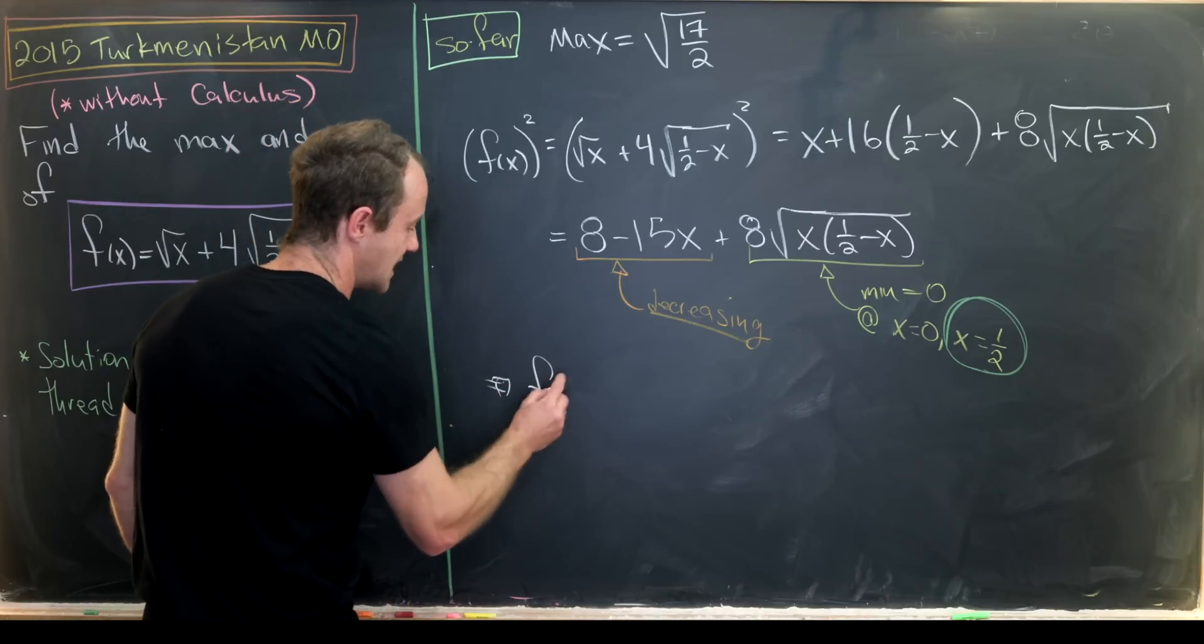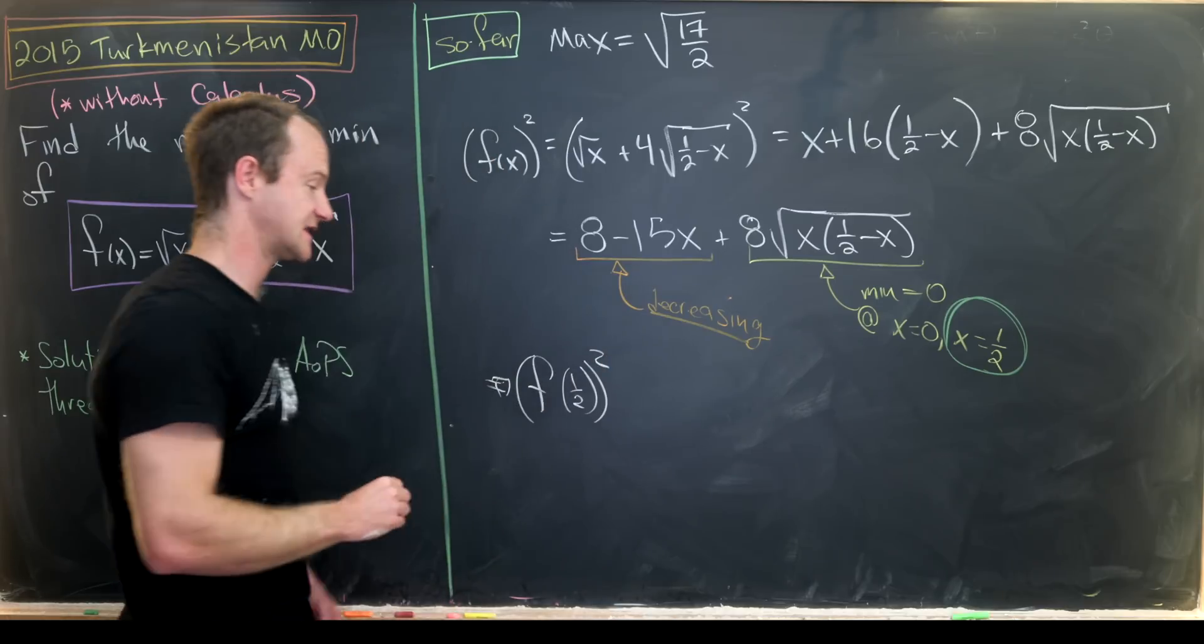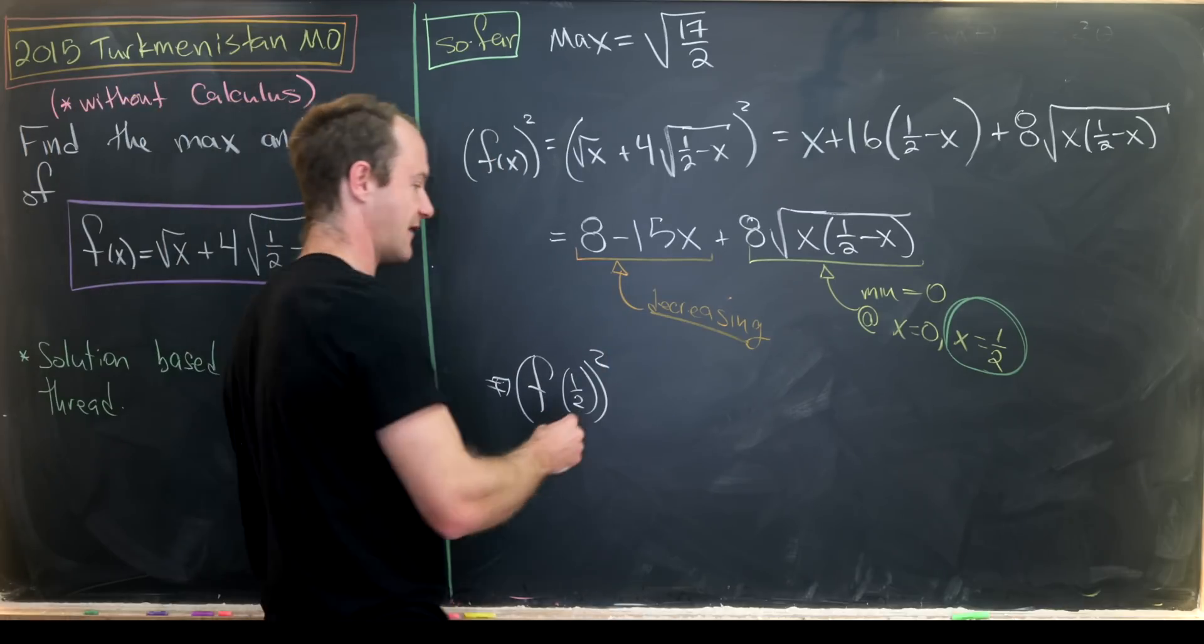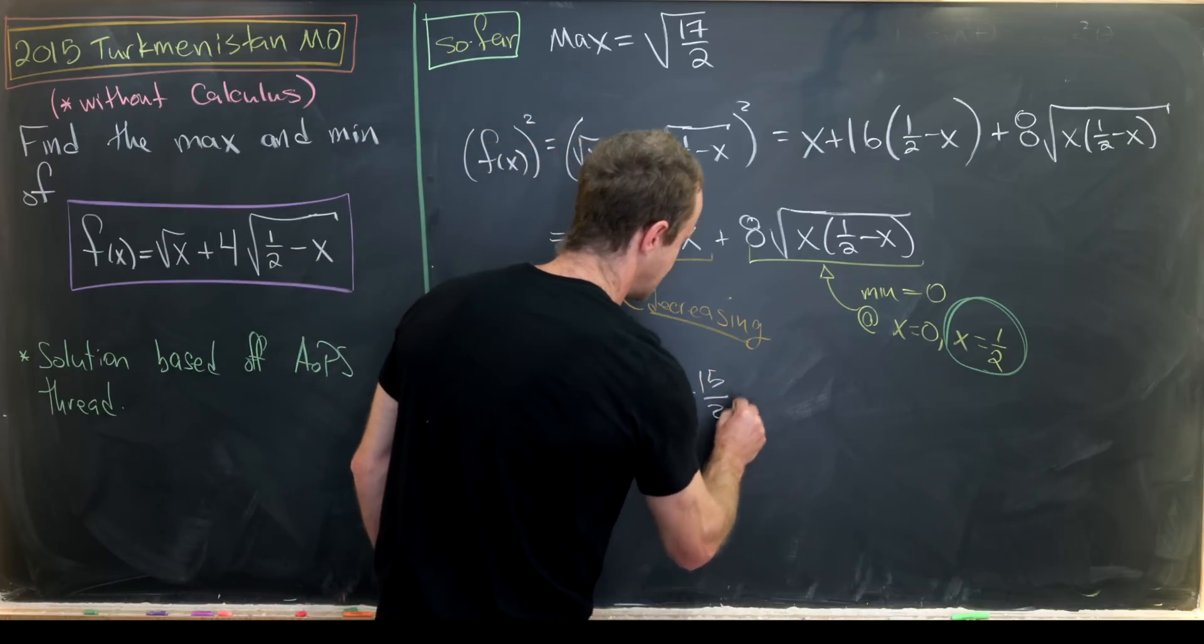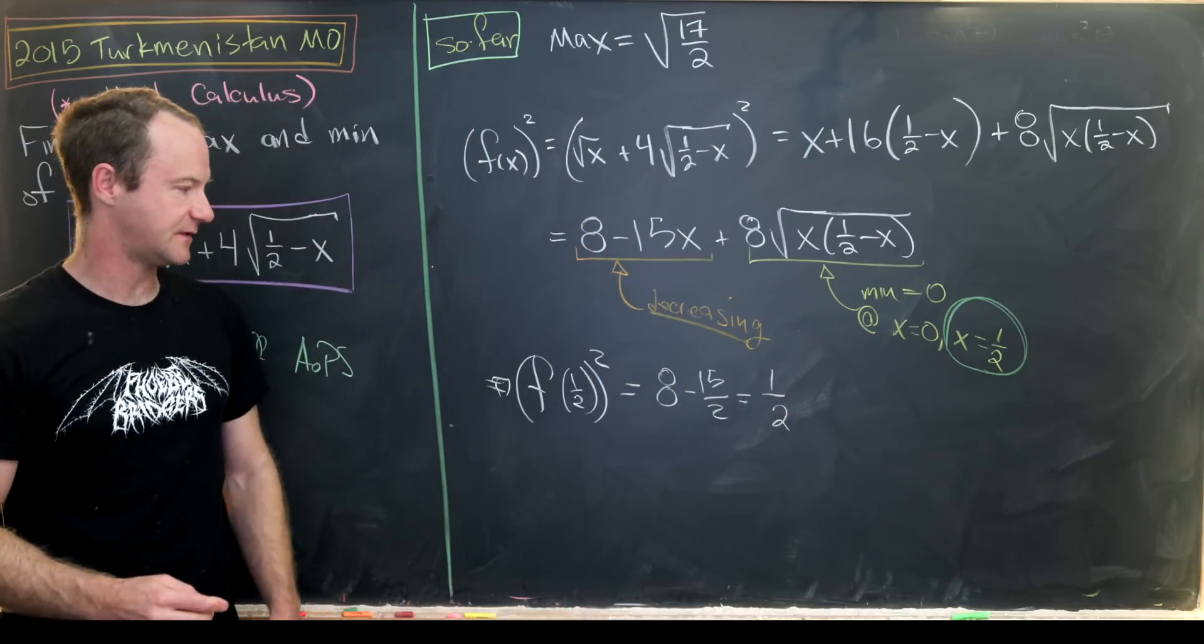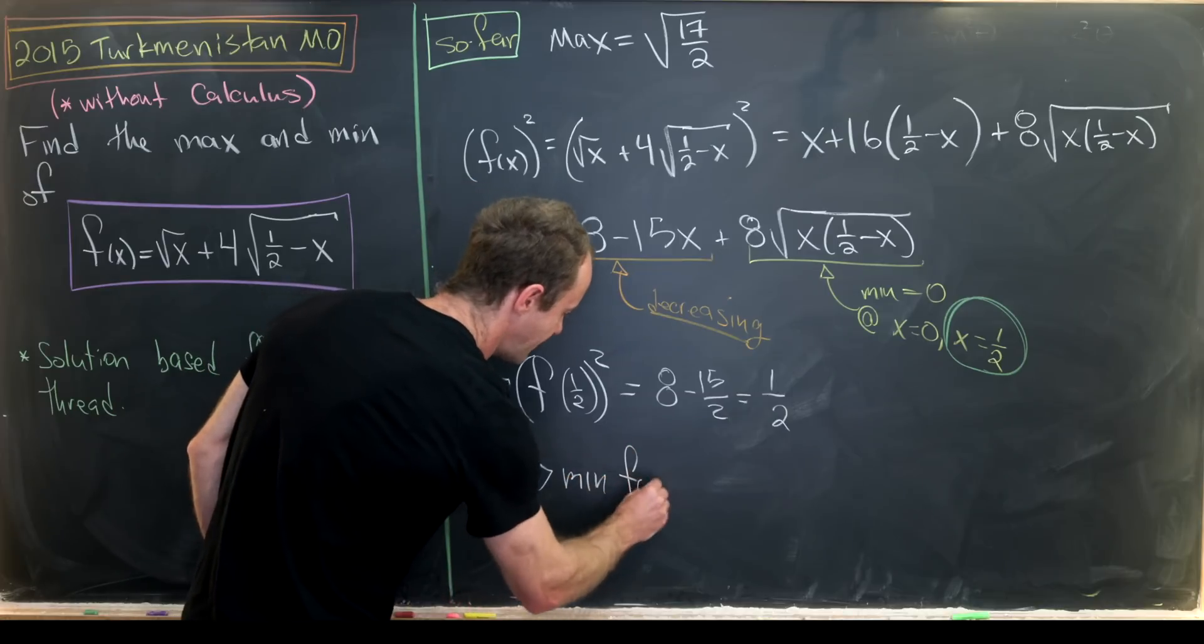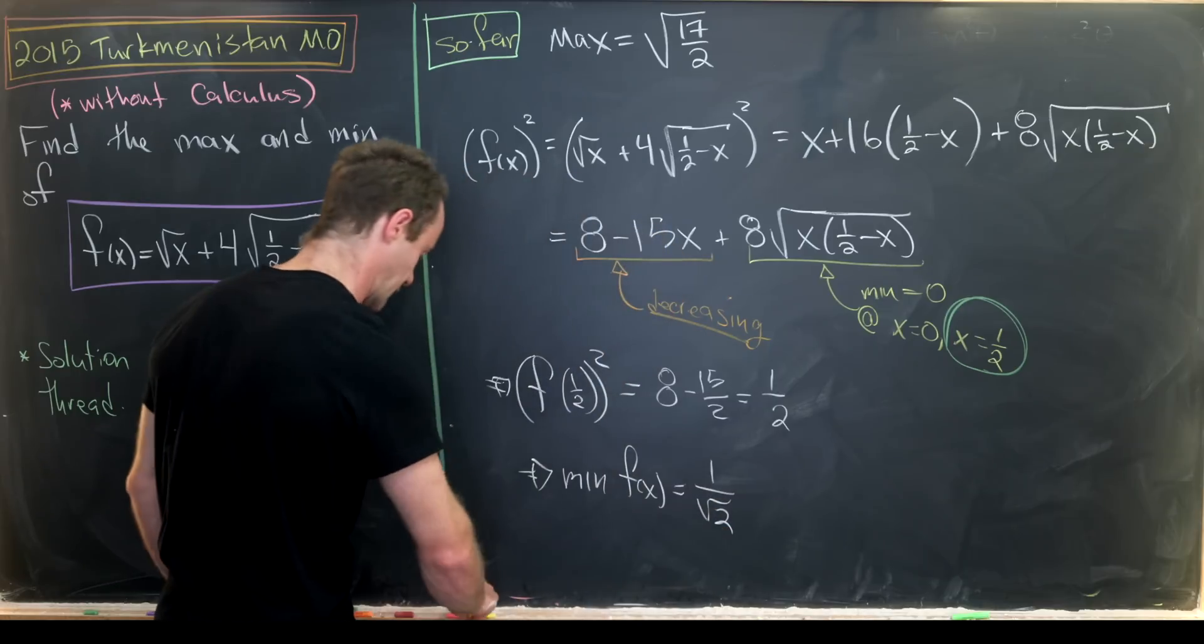So that means our minimum of this squared function is achieved at x equals one half. So that means we're looking for f evaluated at half squared. That ends up being 8 minus 15 over 2, which is one half because it's 16 over 2 minus 15 over 2, which means the minimum value of f of x is the square root of that. In other words, 1 over the square root of 2.